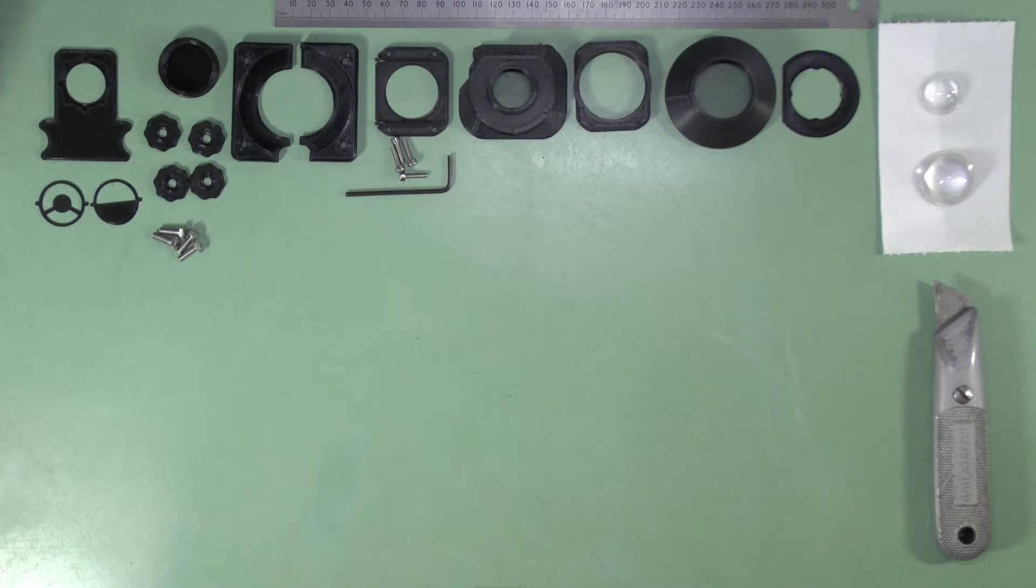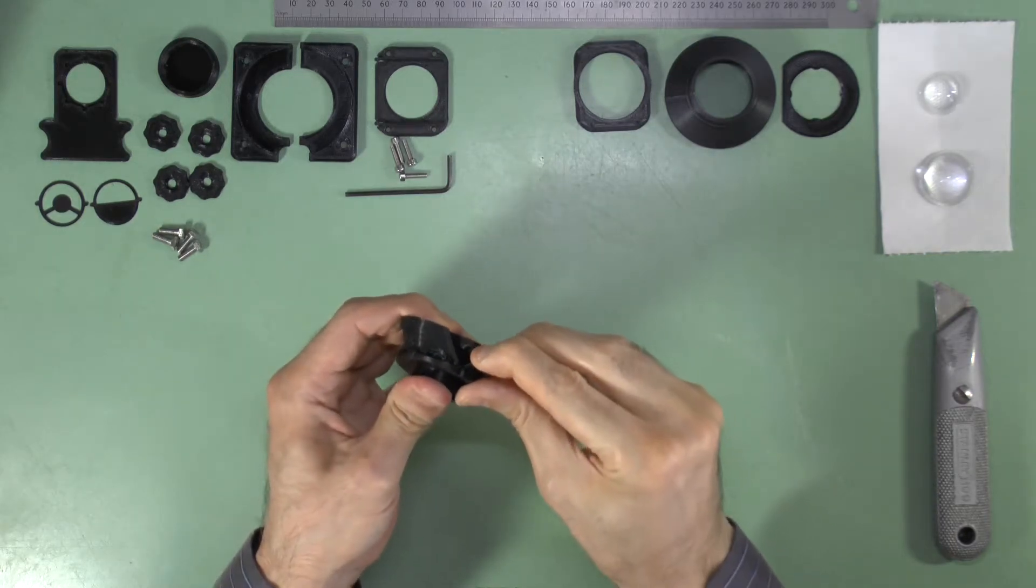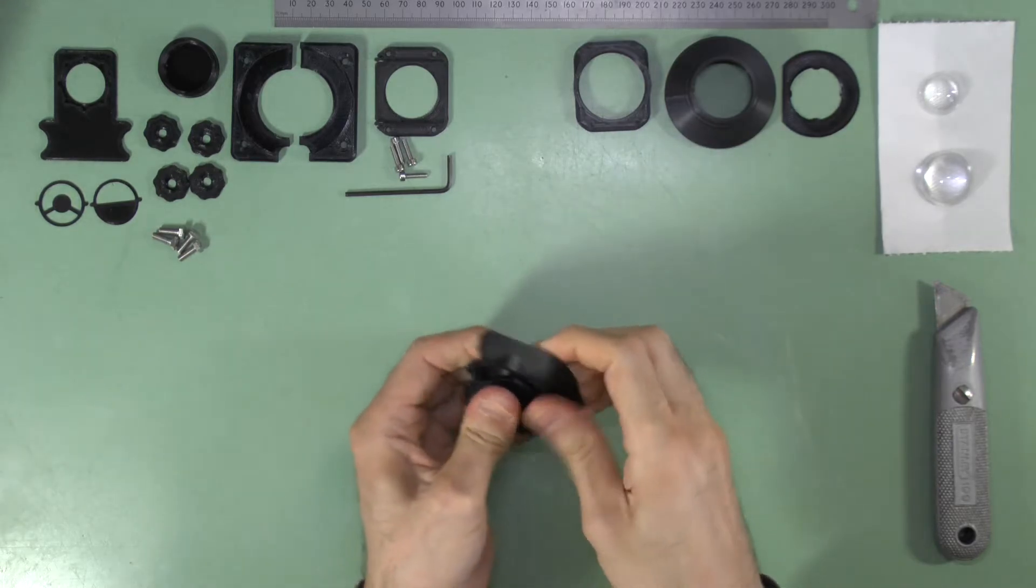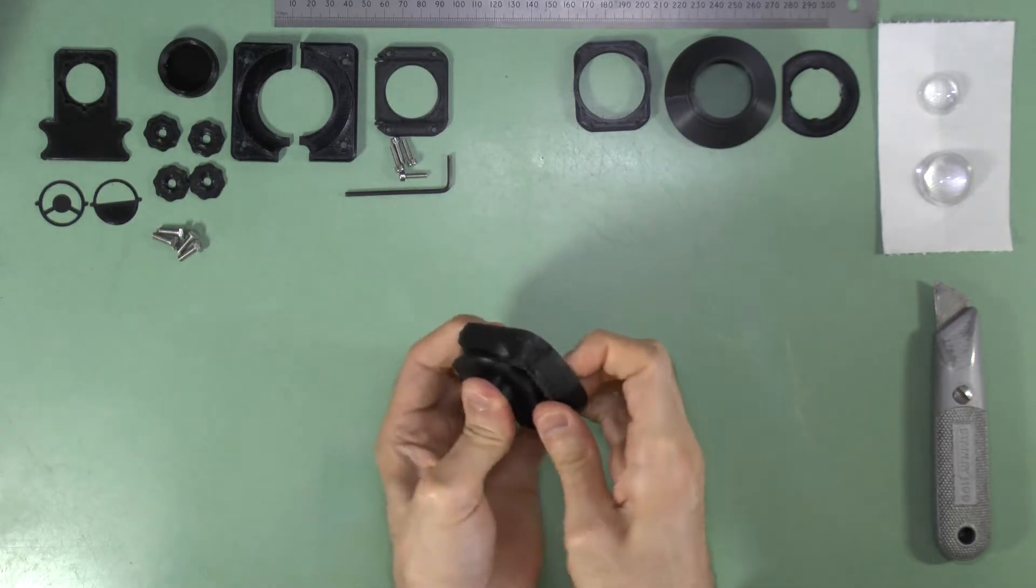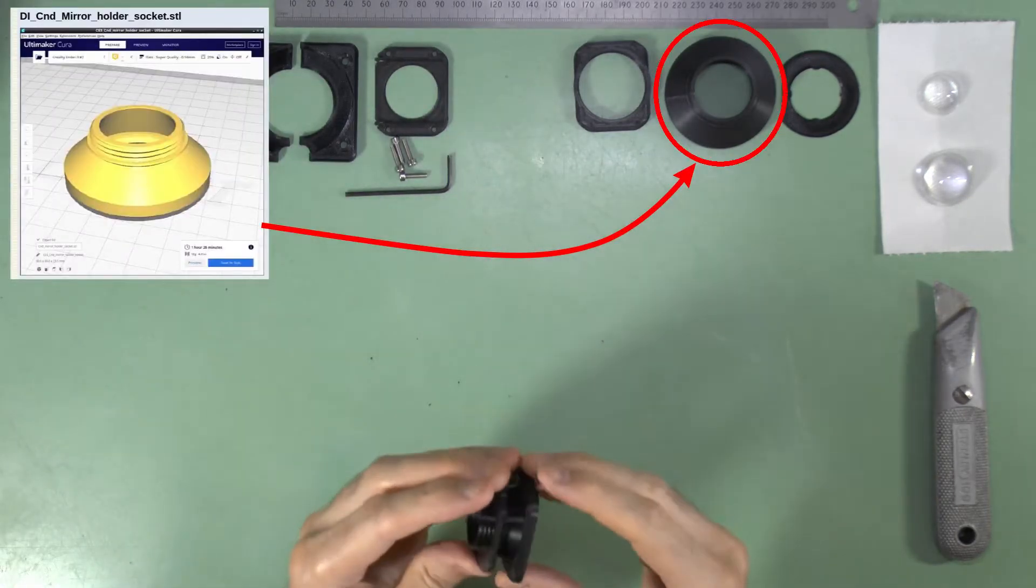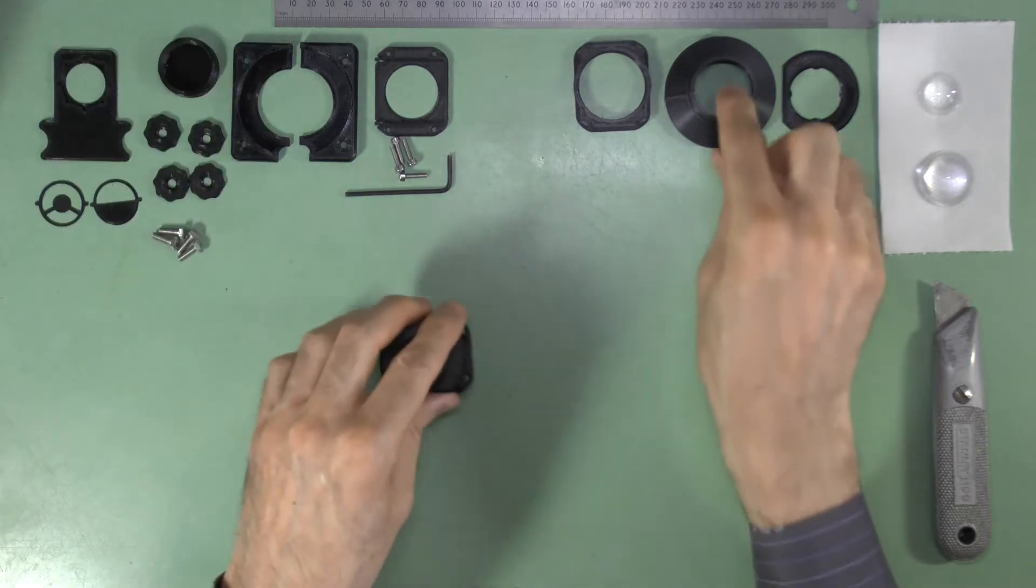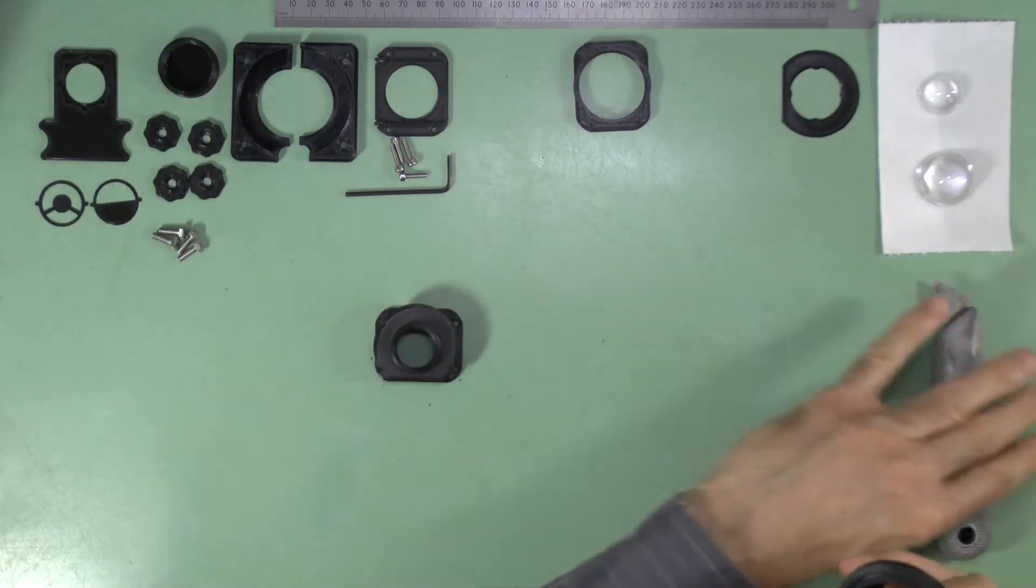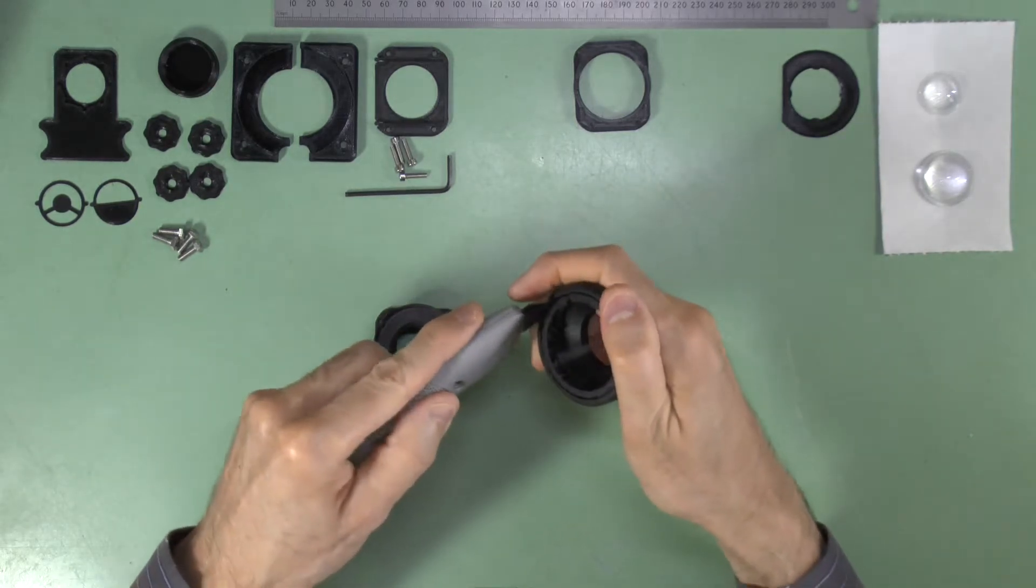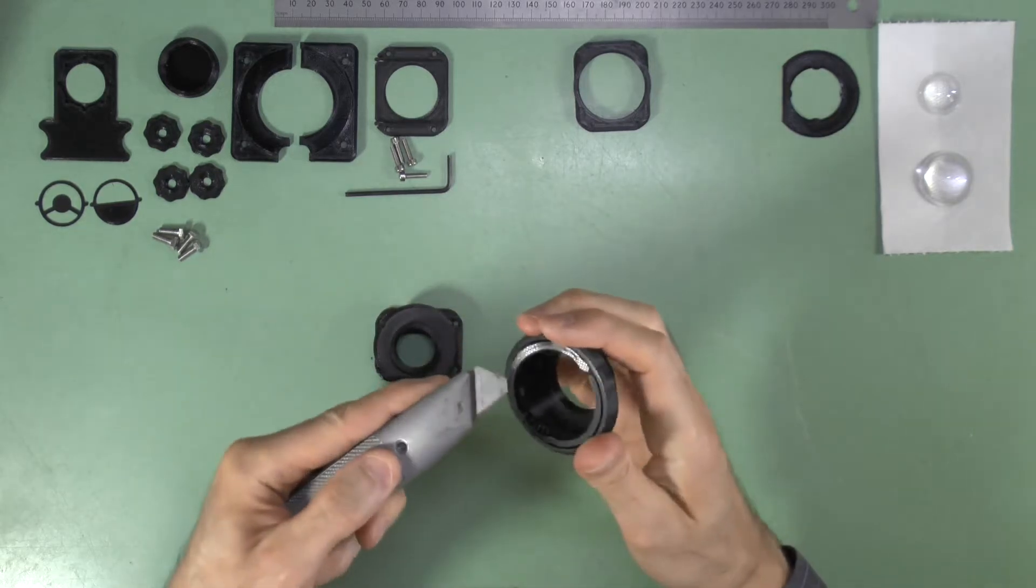First, remove any support structures and other 3D printing artifacts from the parts. Note that when printing the models, you have a choice of two condenser interface adapters. I include here the condenser to mirror holder socket adapter, because today we are interfacing the condenser to the mirror holder. However, if you wanted to use the condenser with the Kohler illuminator, you would instead print the condenser to upper collector adapter.